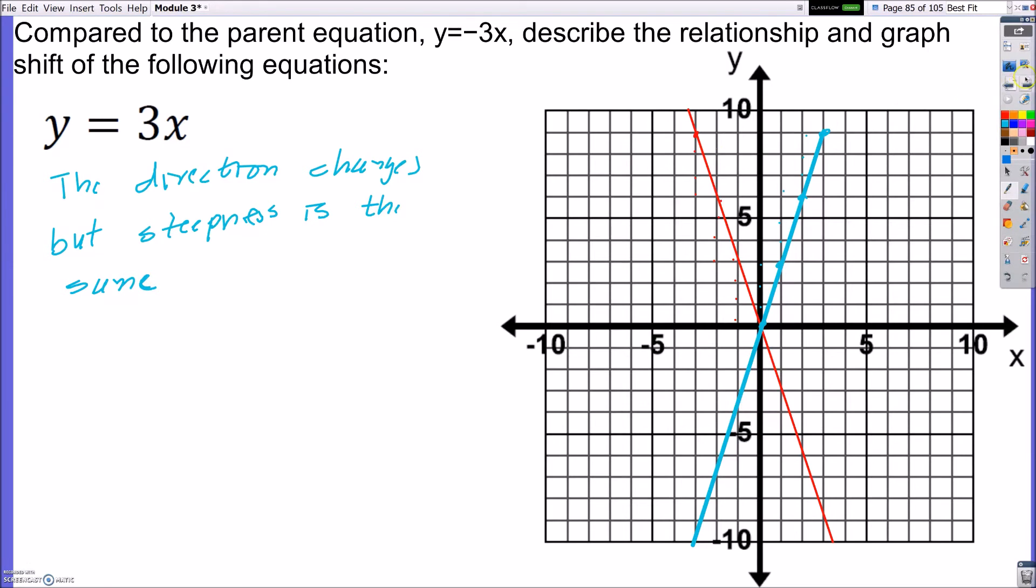All right, so let's go ahead now and look at the next part. It says, what about y equals negative 2x? I need to figure out if it's the same direction. It will be the same direction because they're both negative, but which one is going to be steeper?